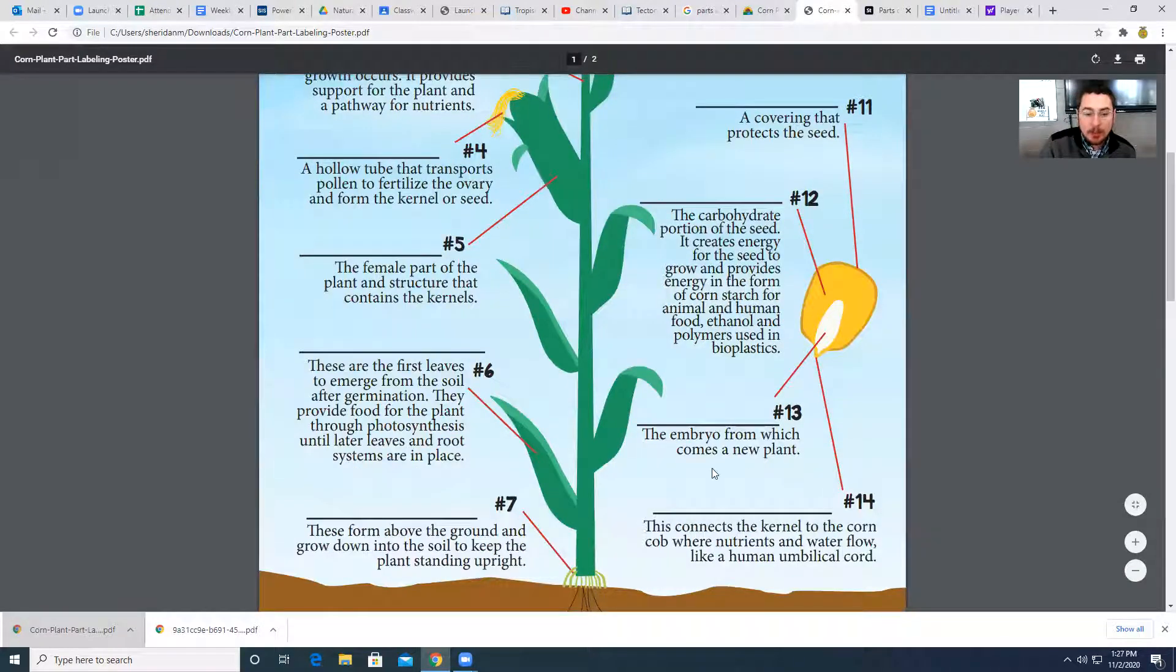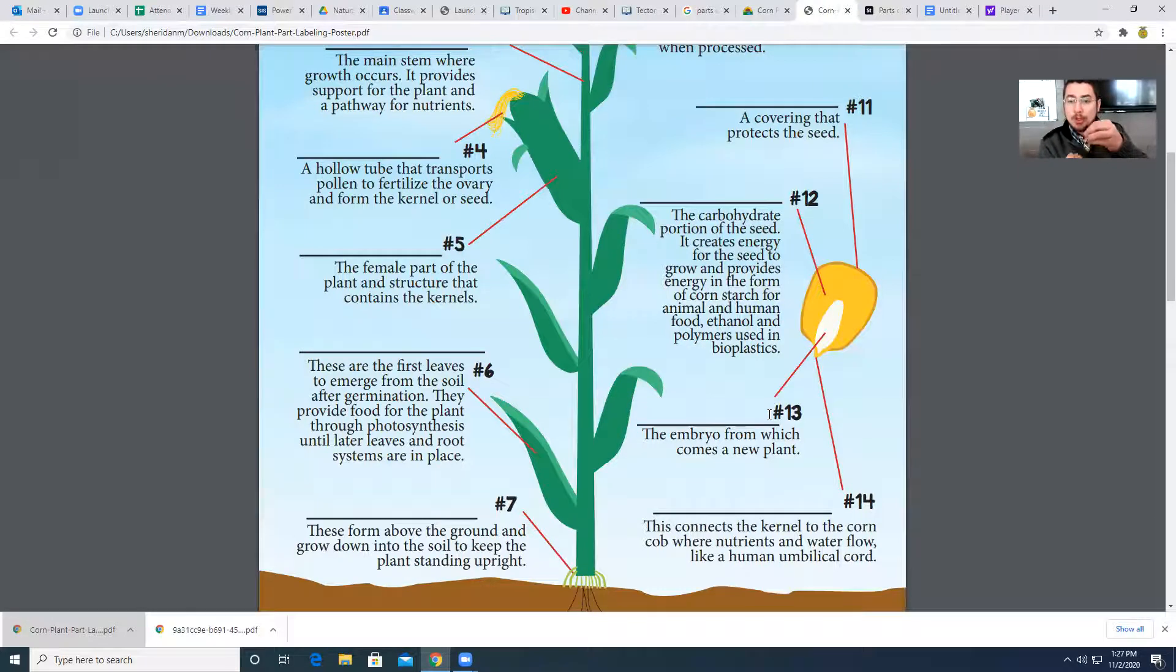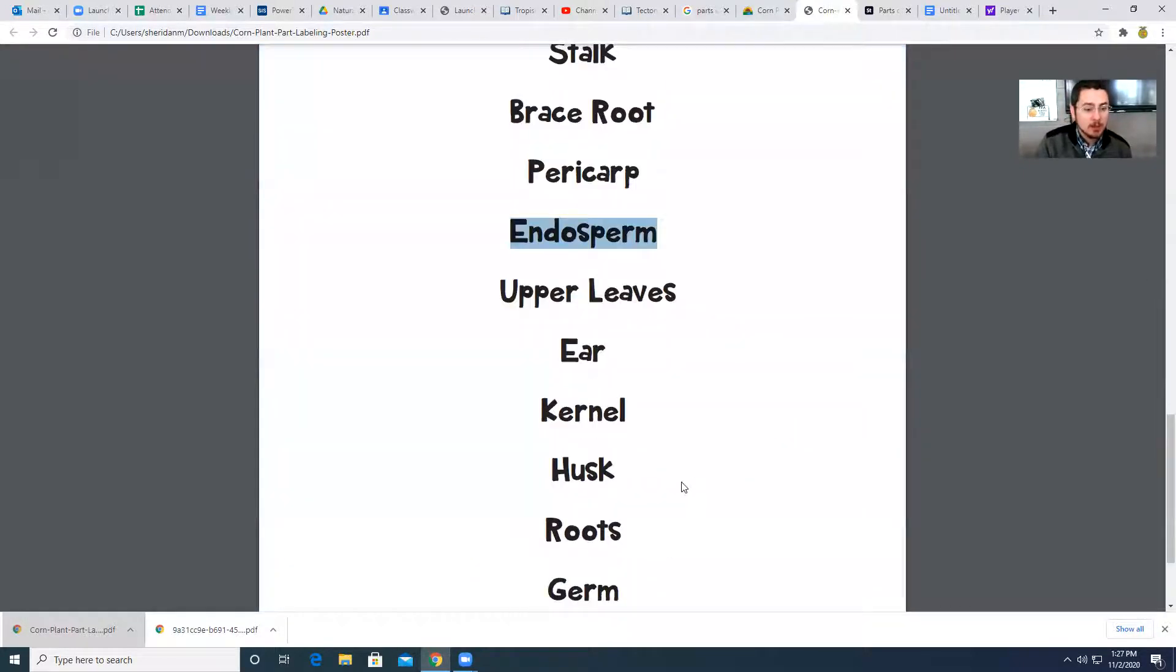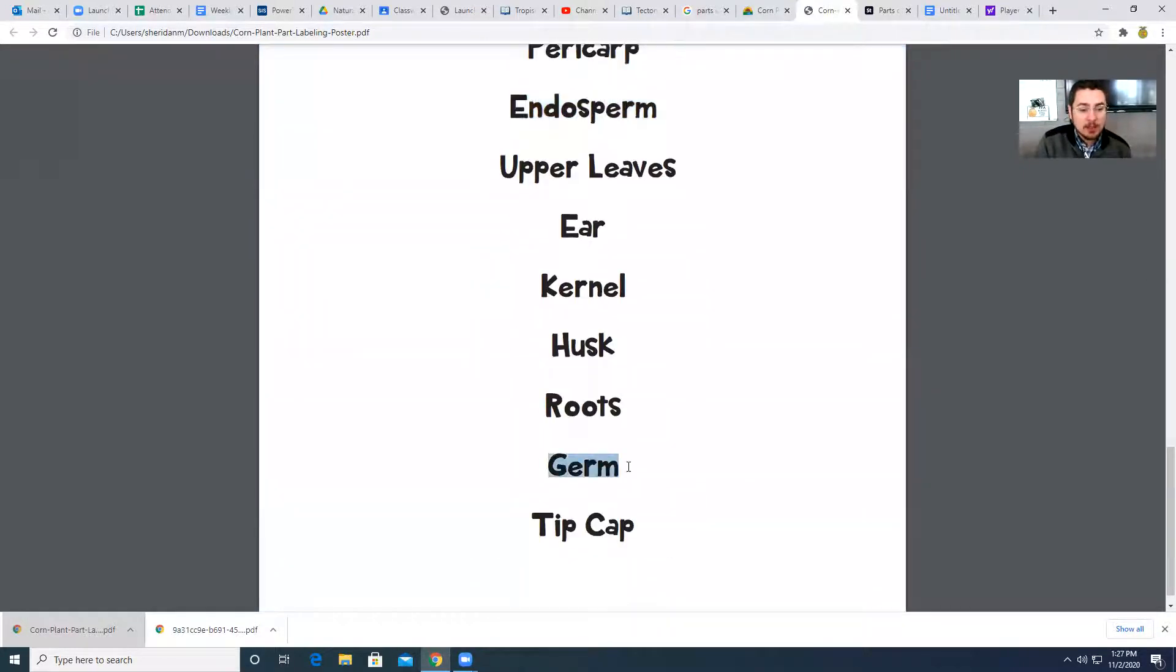Number 13, this part in here, the embryo from which comes a new plant. The term that we use when a plant actually comes out of the ground is germinate. I imagine you've heard that before. So this part right here, this white part is actually called the germ, G-E-R-M. That is the germ.